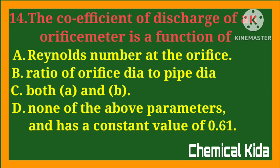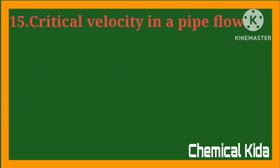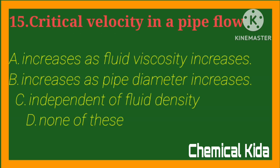The coefficient of discharge of an orifice is a function of: a) Reynolds number at the orifice, b) the ratio of orifice diameter to pipe diameter, c) both a and b, d) none — it has a constant value of 0.6. Answer: c) both a and b.